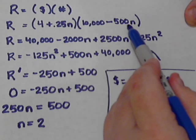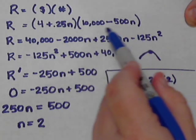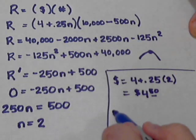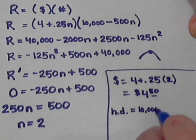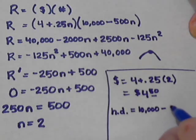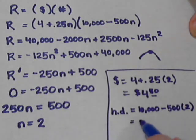How many hot dogs will we sell? Well, here's the formula that tells us how many hot dogs we're selling. So, the number of hot dogs would be 10,000 minus 500 times 2. That calculates out to 9,000.